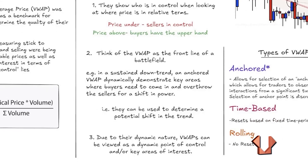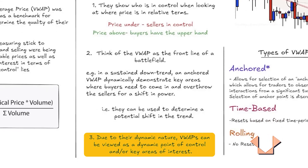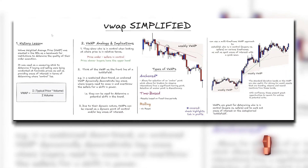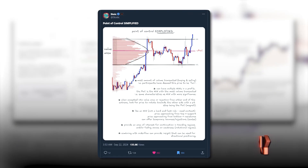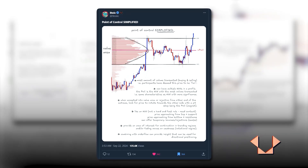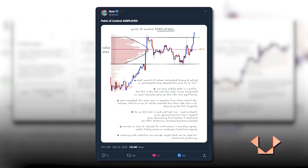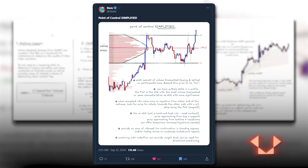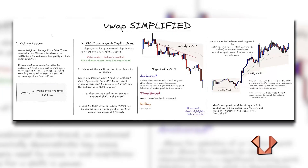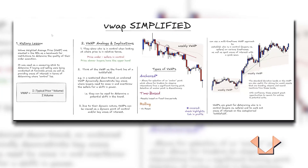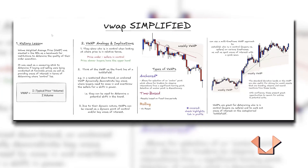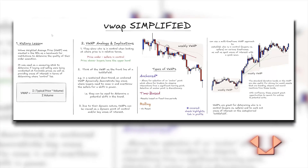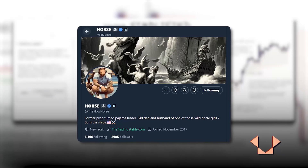Due to the dynamic nature of VWAPs, you can view them as dynamic points of control. A point of control is an area where the most amount of time or volume was transacted. The only person I've heard describe VWAPs as a dynamic point of control — which I think is very clever — was the Flow Horse on Twitter, so go ahead and follow him; he puts out some phenomenal content.